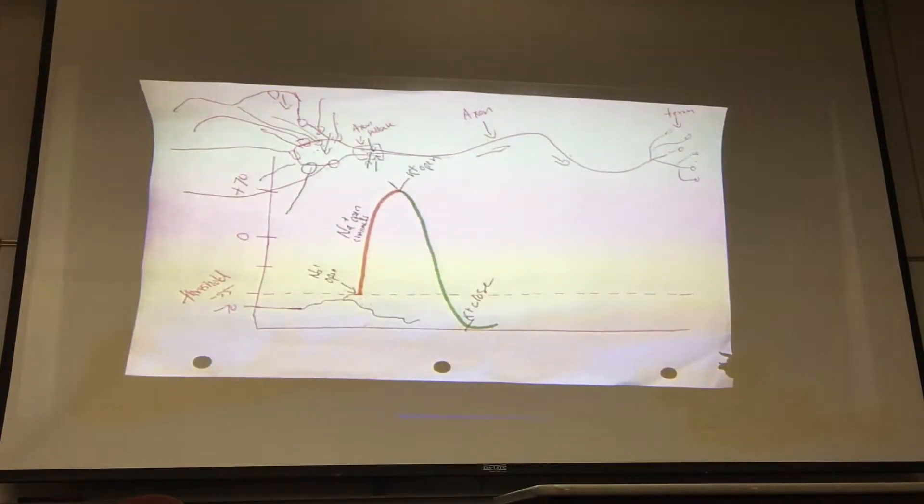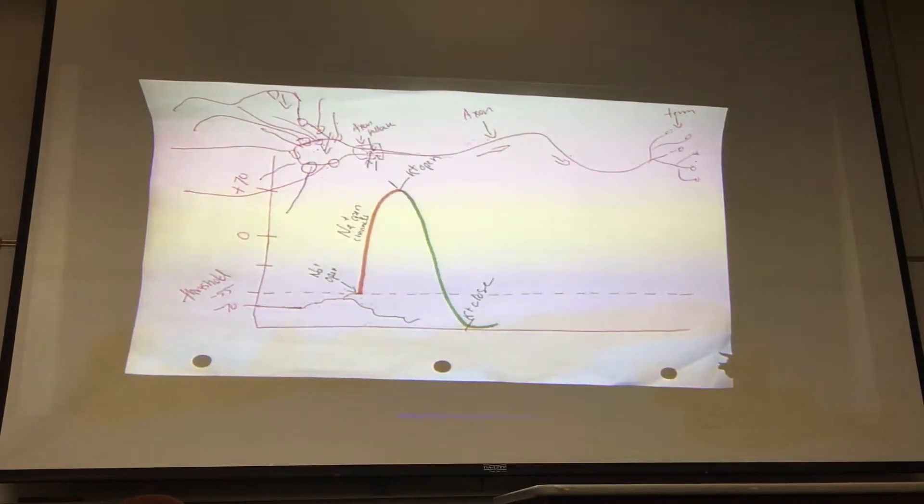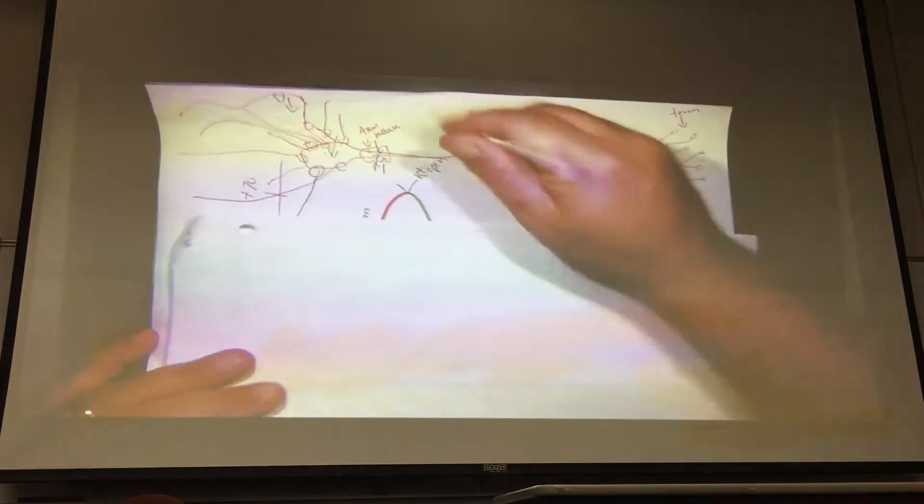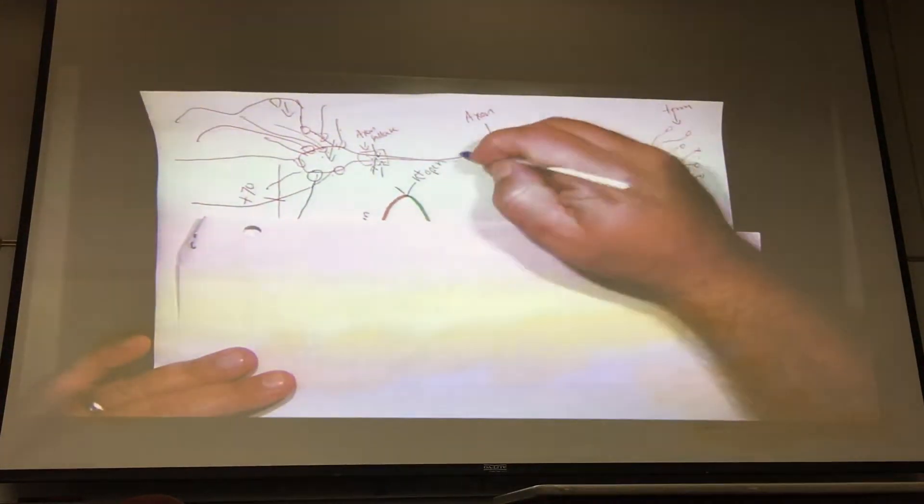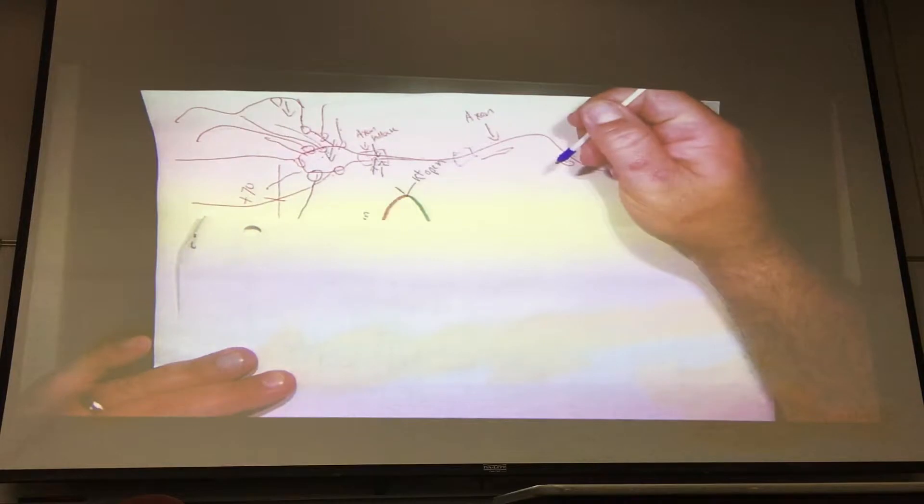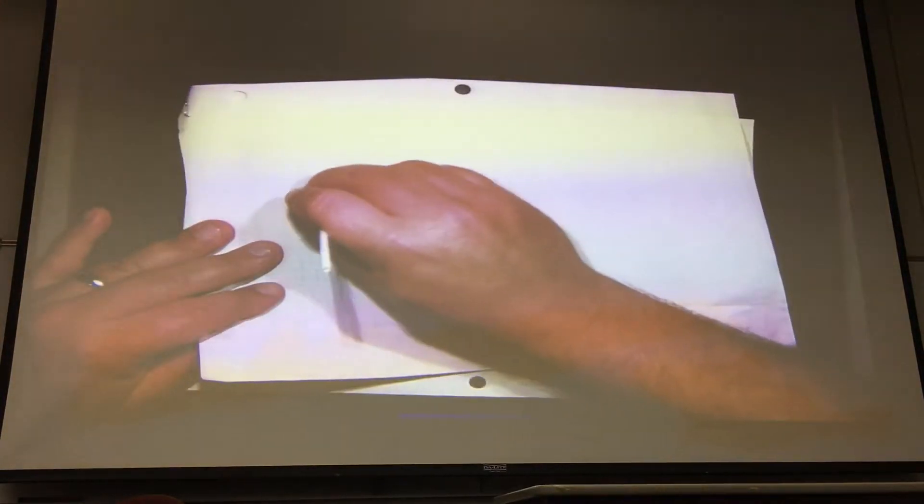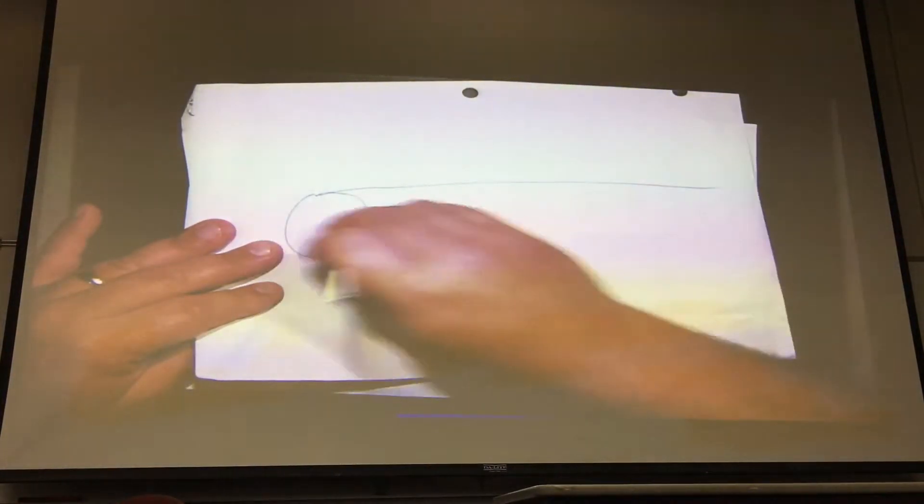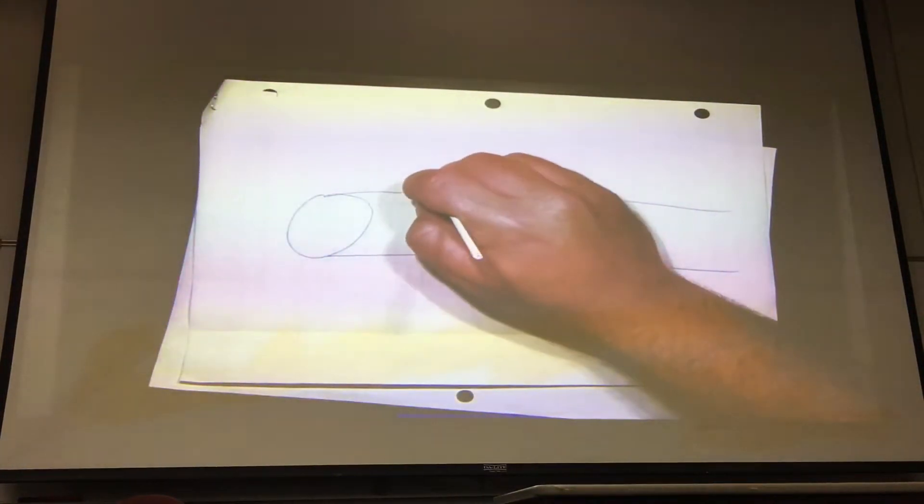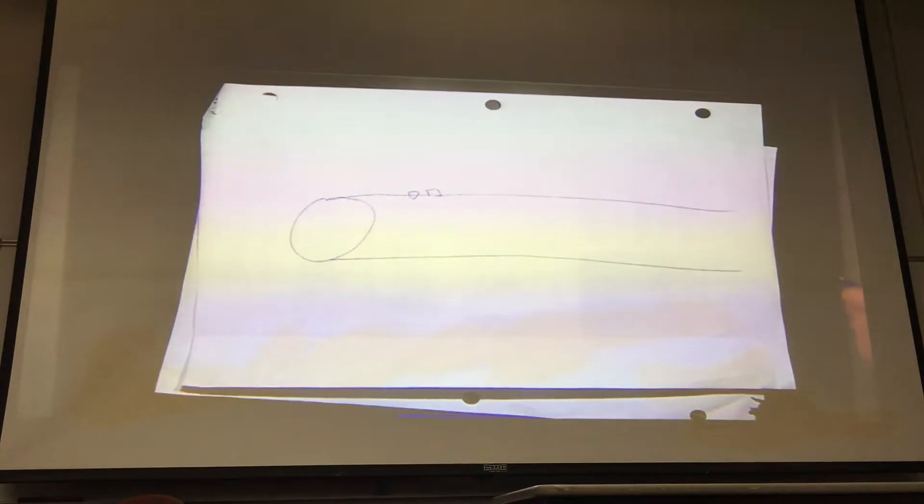And if we look here, we're now going to take a section of this axon and we're going to blow it up. So here's the axon, and within that axon, we have voltage-gated sodium-potassium channels.